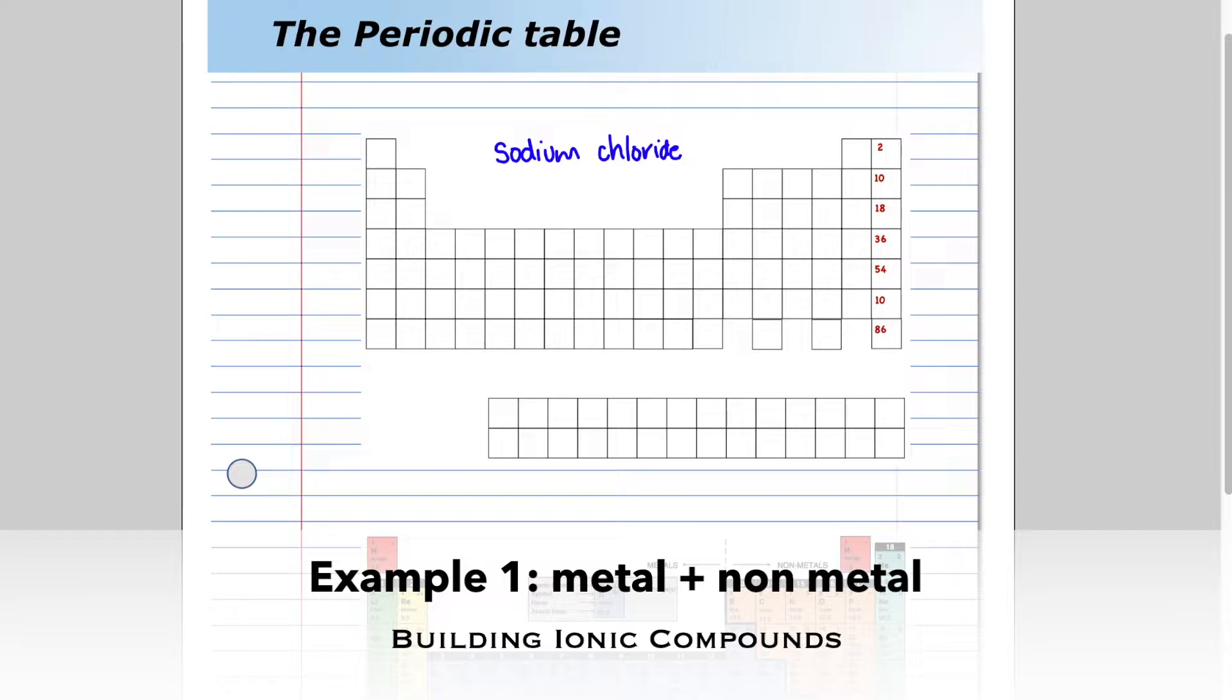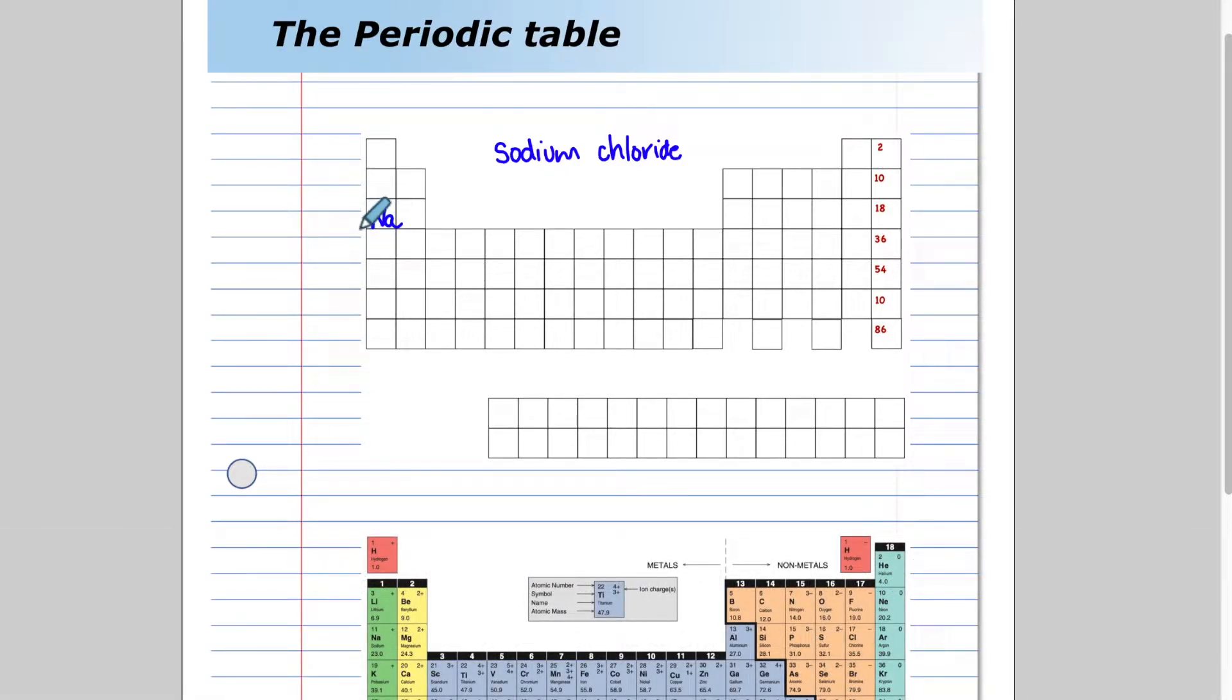How about we start with sodium chloride. Sodium on the periodic table exists right here. Sodium has 11 protons and 11 electrons. It's neutral. The atom is neutral. When sodium combines with chlorine to form sodium chloride, one electron is lost. Sodium turns into a sodium ion.